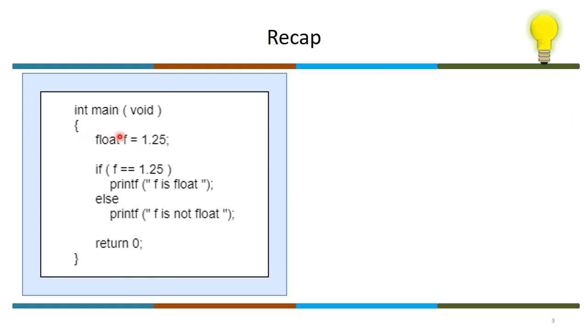This naming of the data type is ironical because float in general represents floating-point representation, but in the context of C, float represents single precision floating-point number and double represents double precision floating-point number. Anyway, f equals 1.25 and we are doing a comparison here. If you have typed this, you would have got f is equal to float.